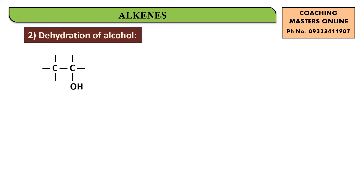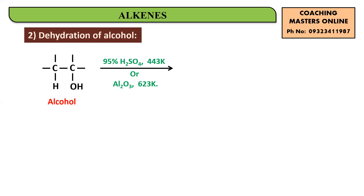First of all, you have taken a molecule of alcohol which contains an OH group, and you have H on the adjacent carbon atom. Now, you need to dehydrate the molecule, so you require a dehydrating agent. The dehydrating agents you can use are concentrated H₂SO₄ at a temperature of 443 Kelvin, or Al₂O₃ at a temperature of 623 Kelvin.